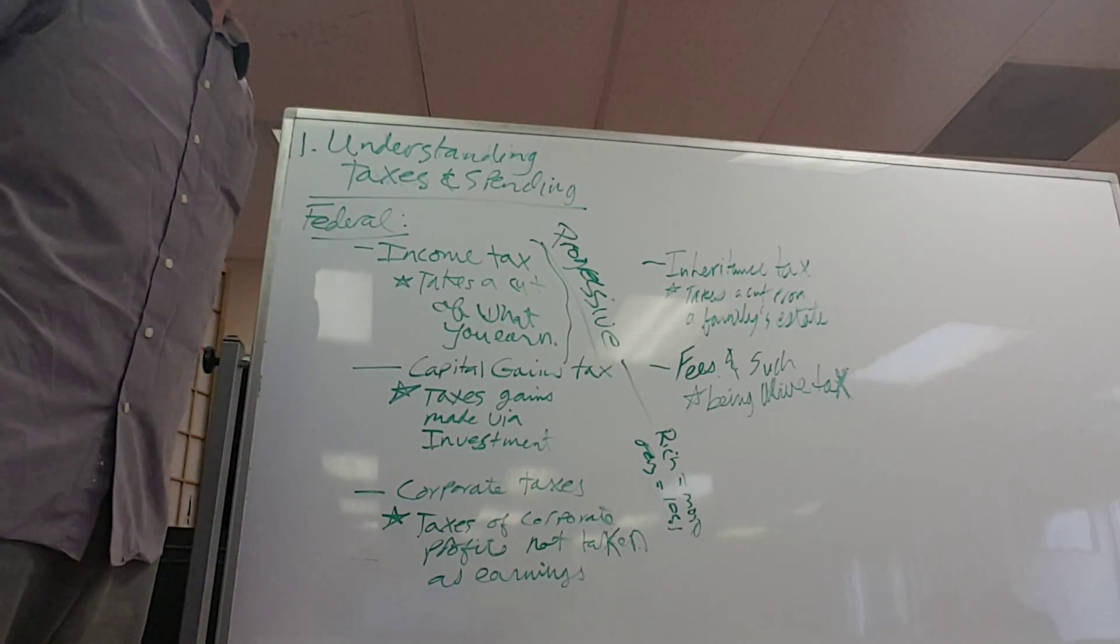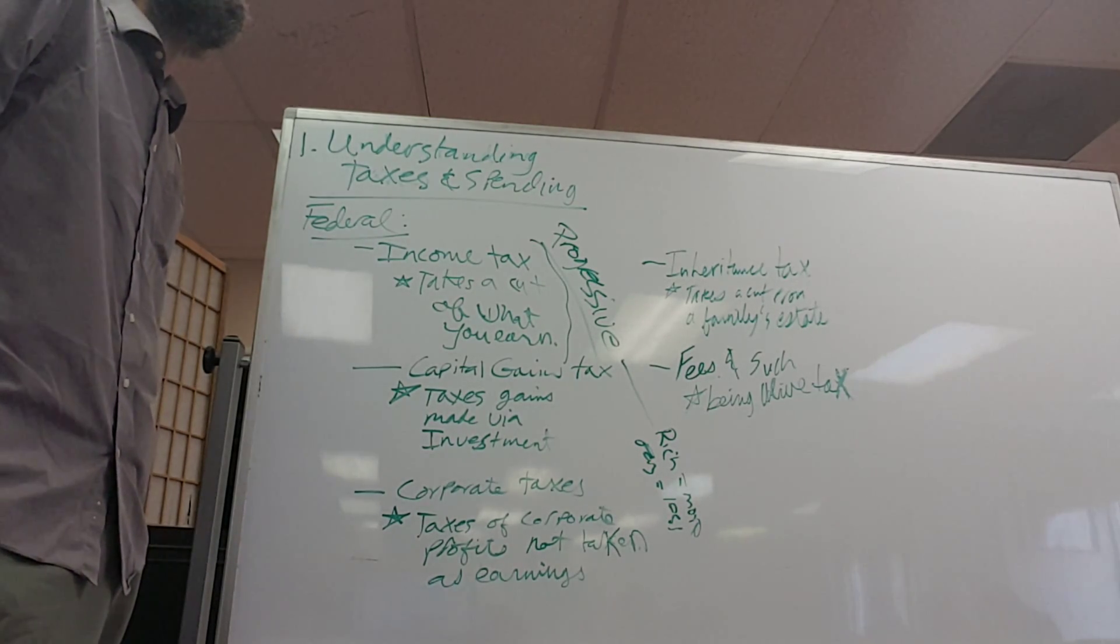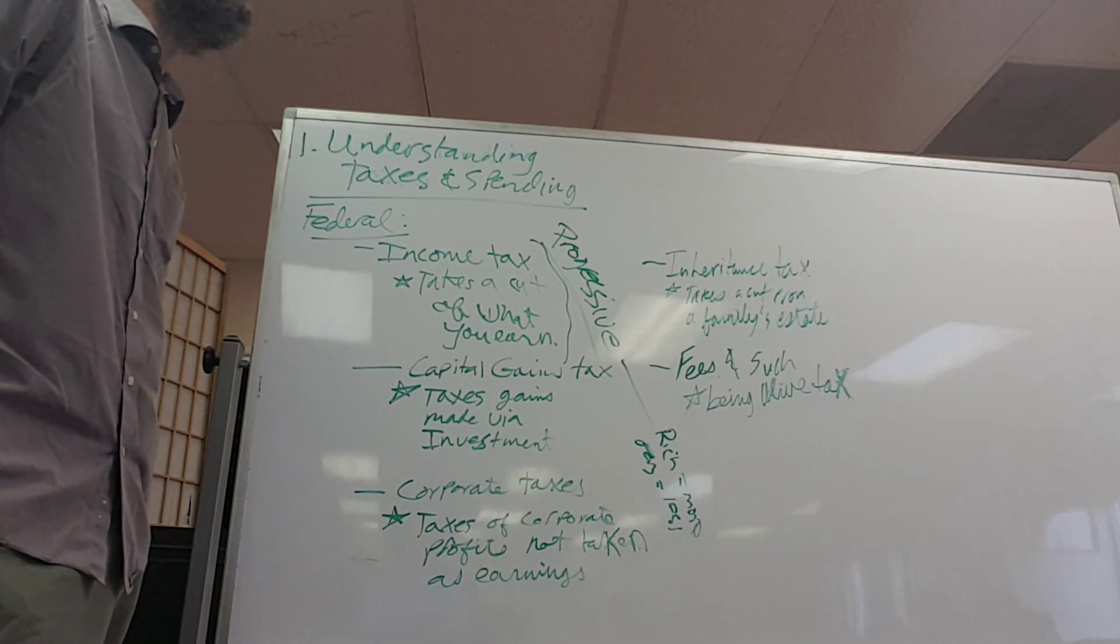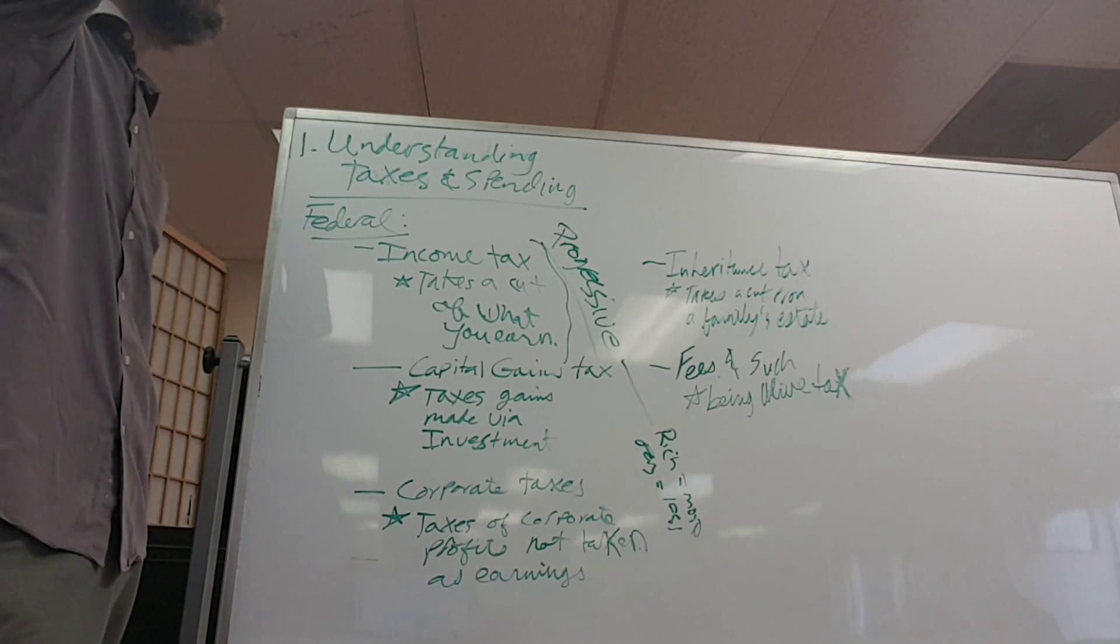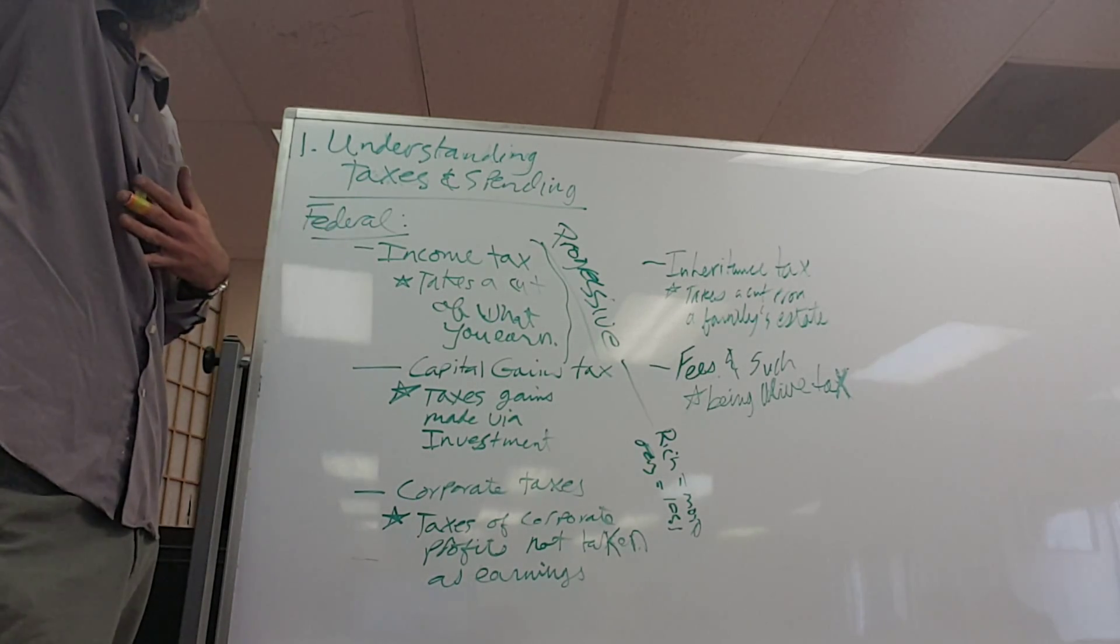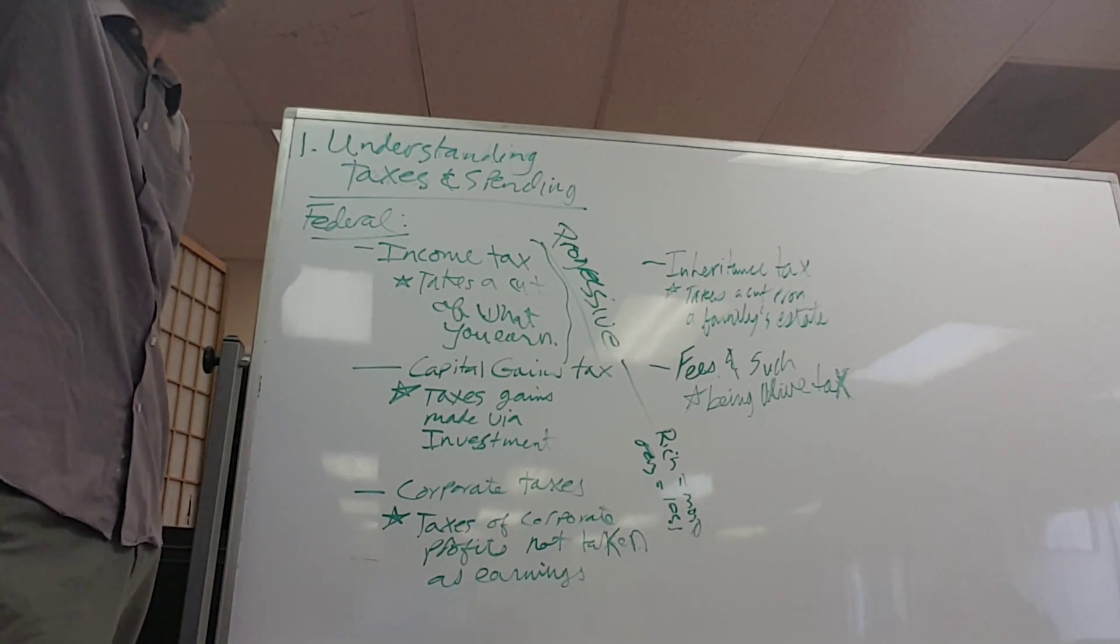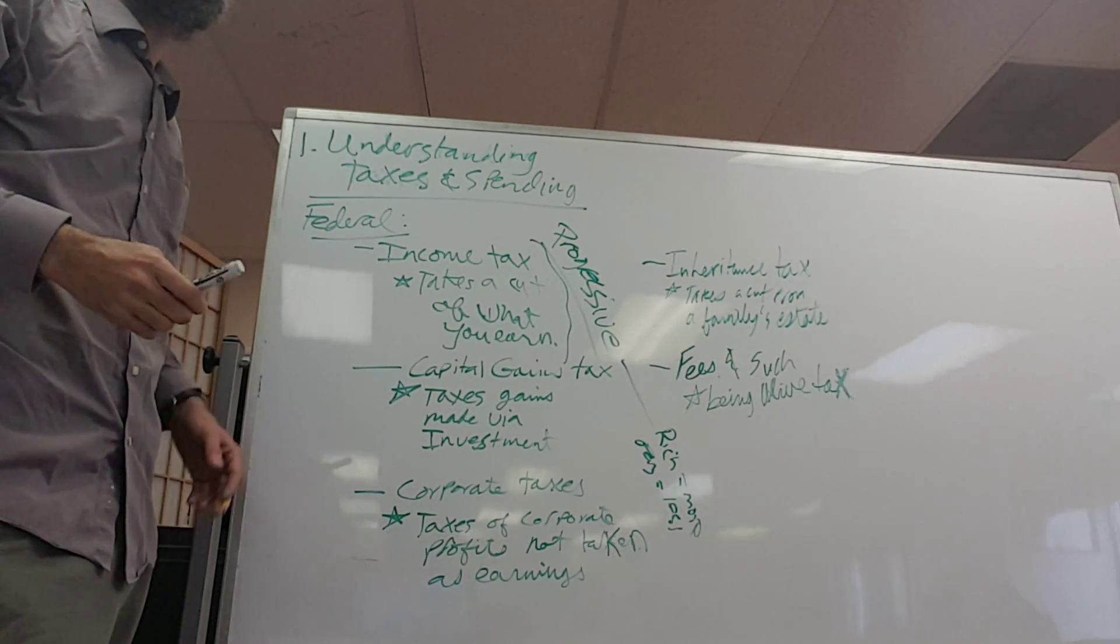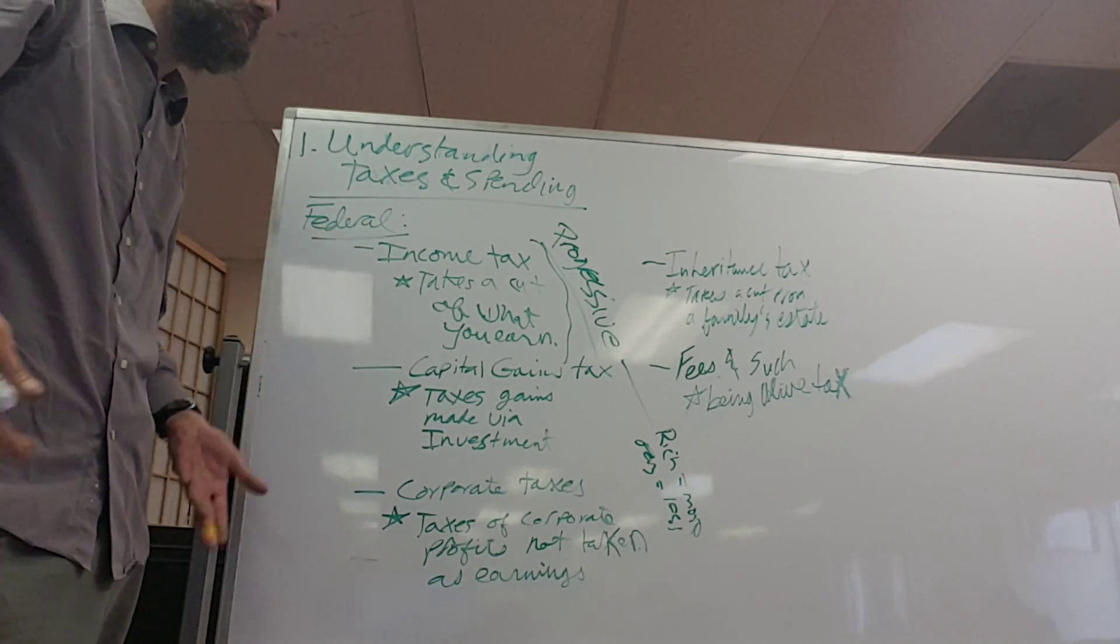Corporate taxes. There's a distinction between corporate taxes and taxes that you might make as your earnings. For example, autonomy debate is a corporation. If autonomy debate makes money that doesn't get given to people in the company, so for example, most of the money that autonomy makes is going to be paid to either employees as earnings or to me as earnings or profit. So it's not going to be just sitting in the bank account in the company just waiting around because it's useless.